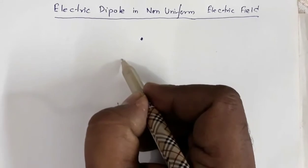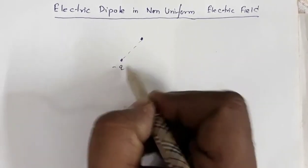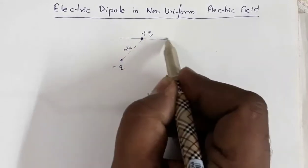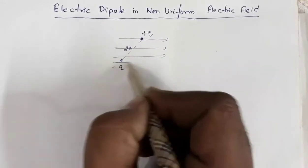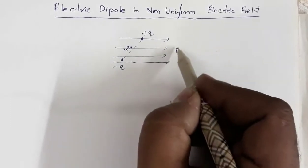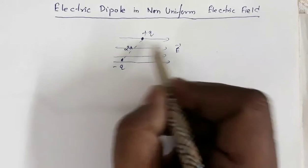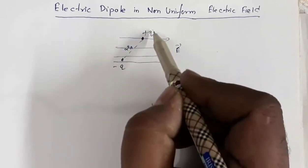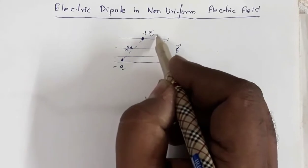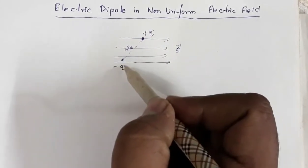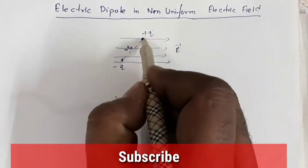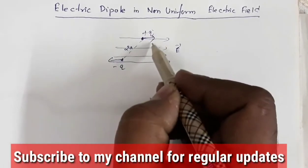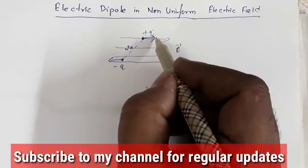Consider a dipole with a negative charge and a positive charge separated by a small distance 2a, placed in a uniform electric field represented by parallel equally spaced lines. The electric field is the same everywhere. The positive charge experiences a force in the direction of the electric field, and the negative charge experiences a force opposite to the electric field, so the net force on the dipole is zero.